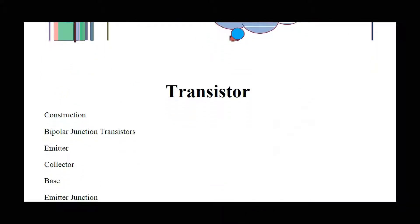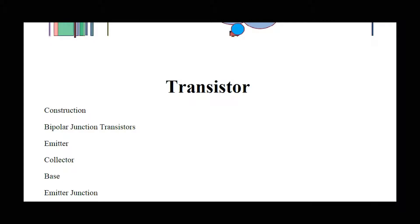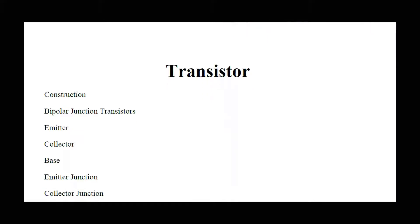First we will discuss the construction of a transistor. Then we will discuss two types of transistors: field effect transistors and bipolar junction transistors. In this lecture, our main discussion will be about bipolar junction transistors, which consist of an emitter, collector, base, emitter junction, base junction, and finally the working of a transistor.